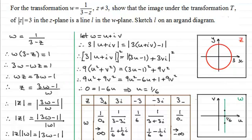So that gives you some idea of how these two relate to one another under the transformation W equals 1 over 3 minus Z, using the modulus method. In the other video that follows, I show you an alternative method where I compare real and imaginary parts. I hope you'll look at that so you can compare the two different methods and decide which one you prefer.